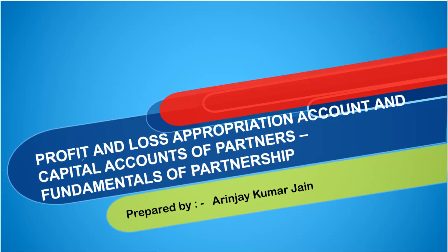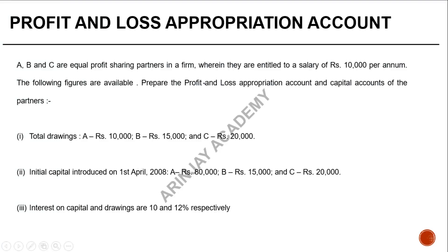We will now look at a comprehensive problem where we are going to prepare the profit and loss appropriation account with all the adjustments available, and simultaneously also prepare the capital accounts of the partners. A, B, and C are equal profit sharing partners in a firm, entitled to a salary of $10,000 per annum. Please prepare the profit and loss appropriation account and the capital accounts of the partners.